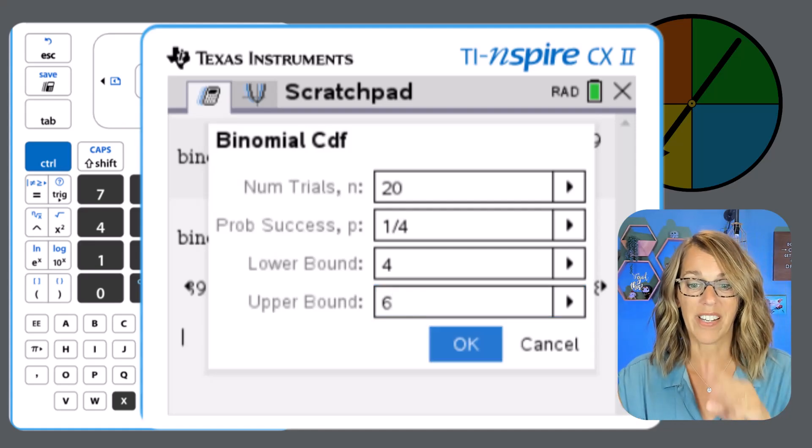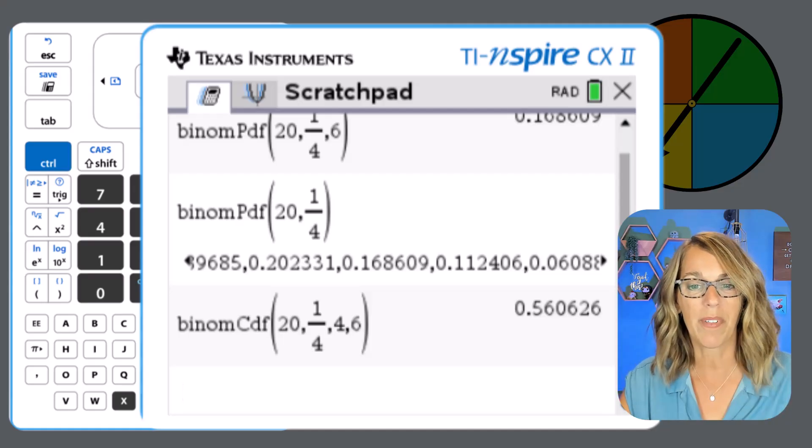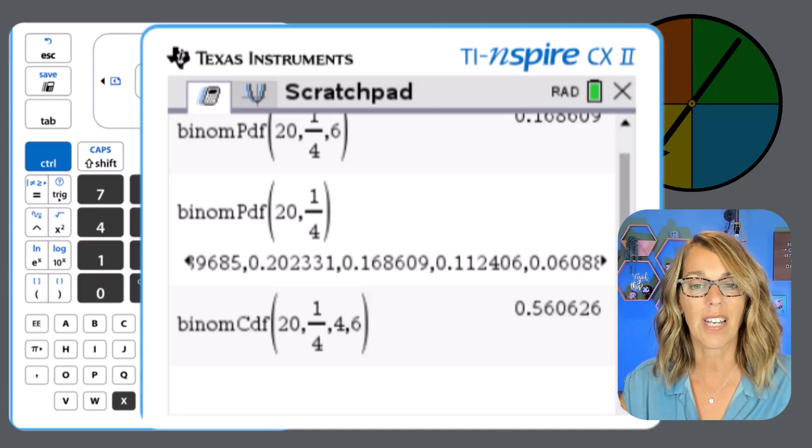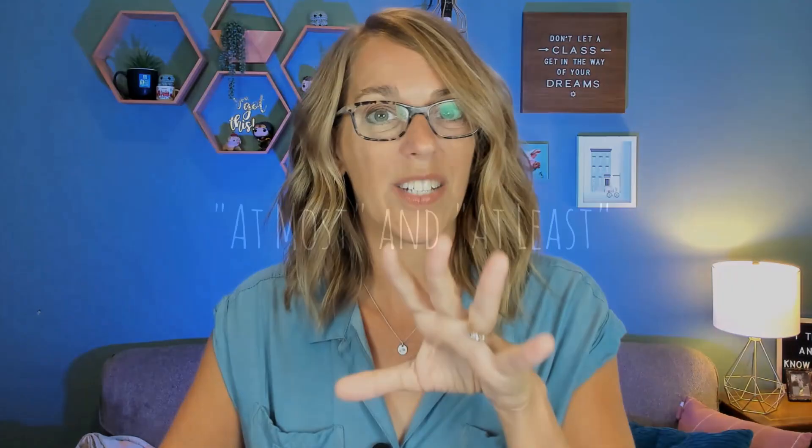So it's going to add those three probabilities together for me. And then I can hit enter, and I end up with a probability of 0.5606 or about 56.06%. Next, we want to look at the probabilities of at most and at least.